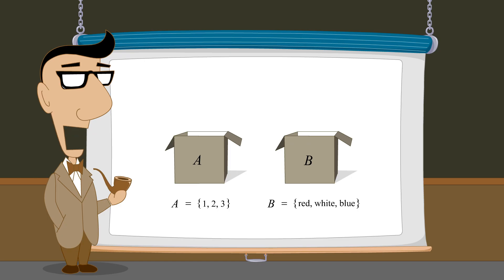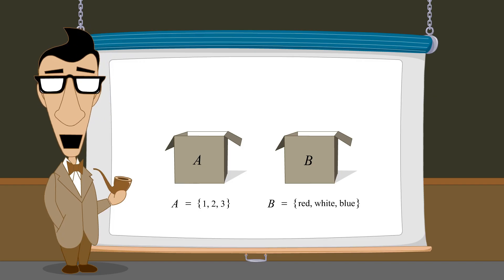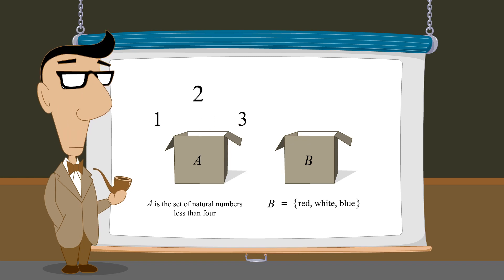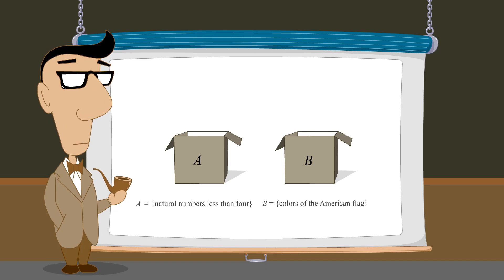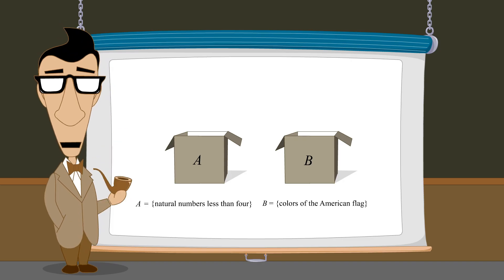Instead of listing each member, a set can also be defined by stating the properties that its members must satisfy. For example, for set A, instead of listing the elements, we could say that A is the set of natural numbers less than 4. And we could define set B as the set of colors of the American flag. Another option is to enclose the description in curly brackets. The brackets are read as 'the set of all'. For example, A is the set of all natural numbers less than 4.